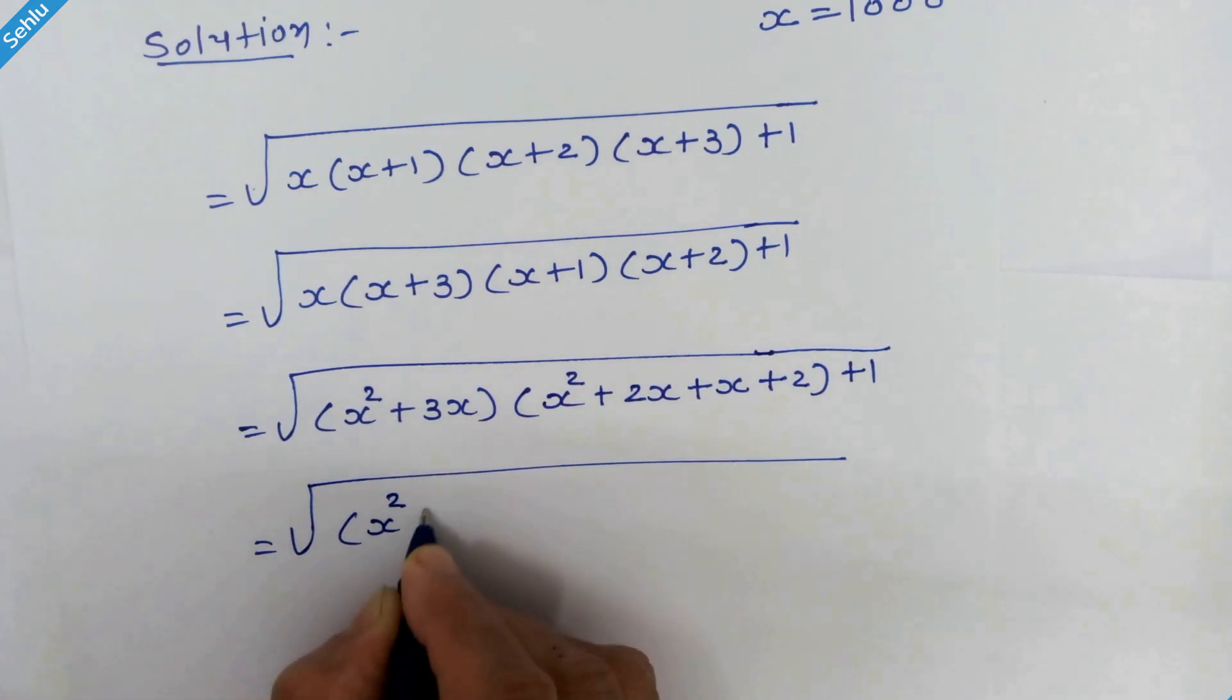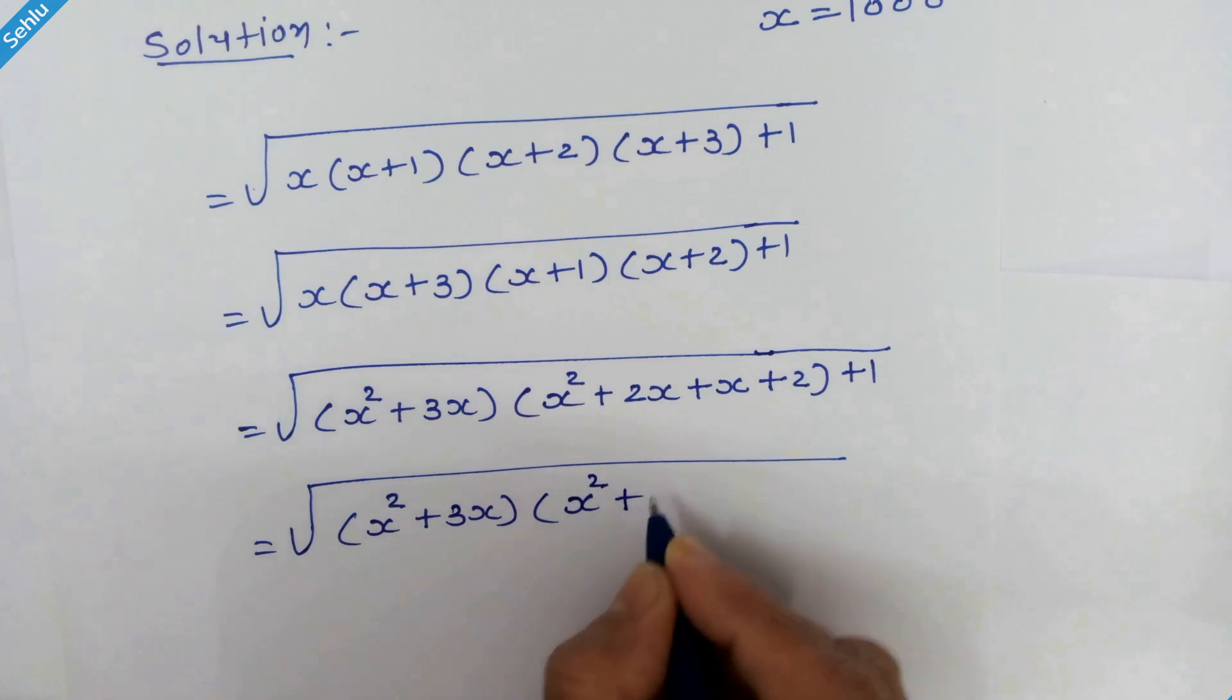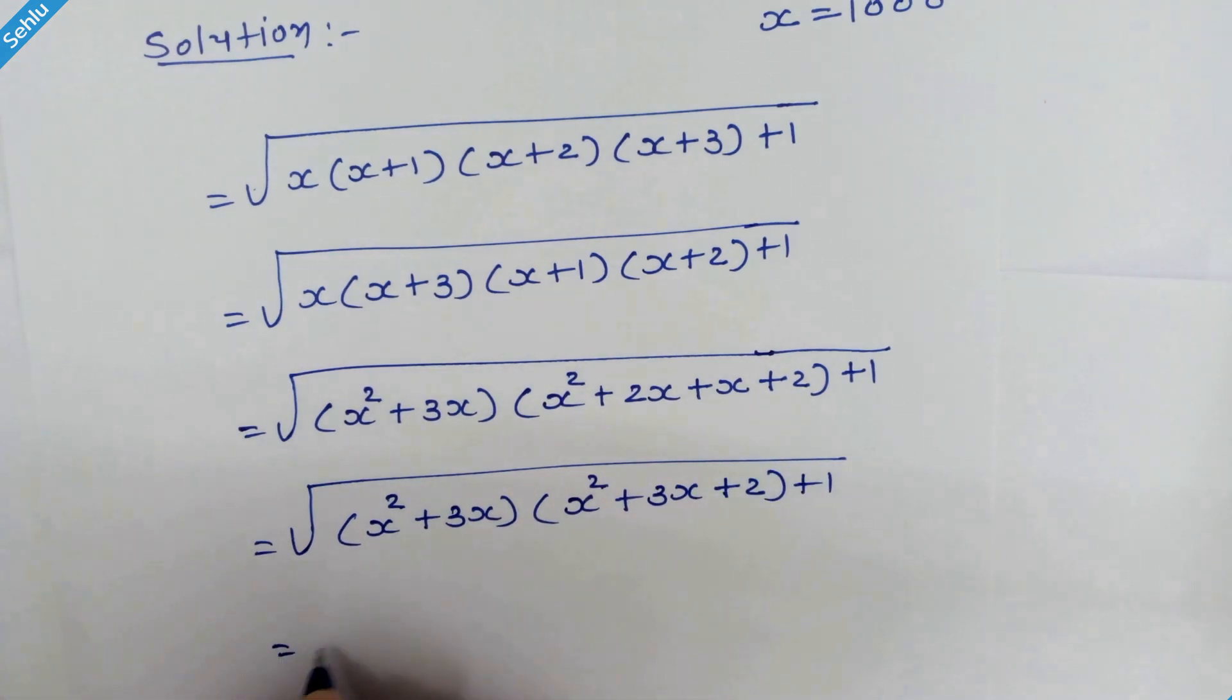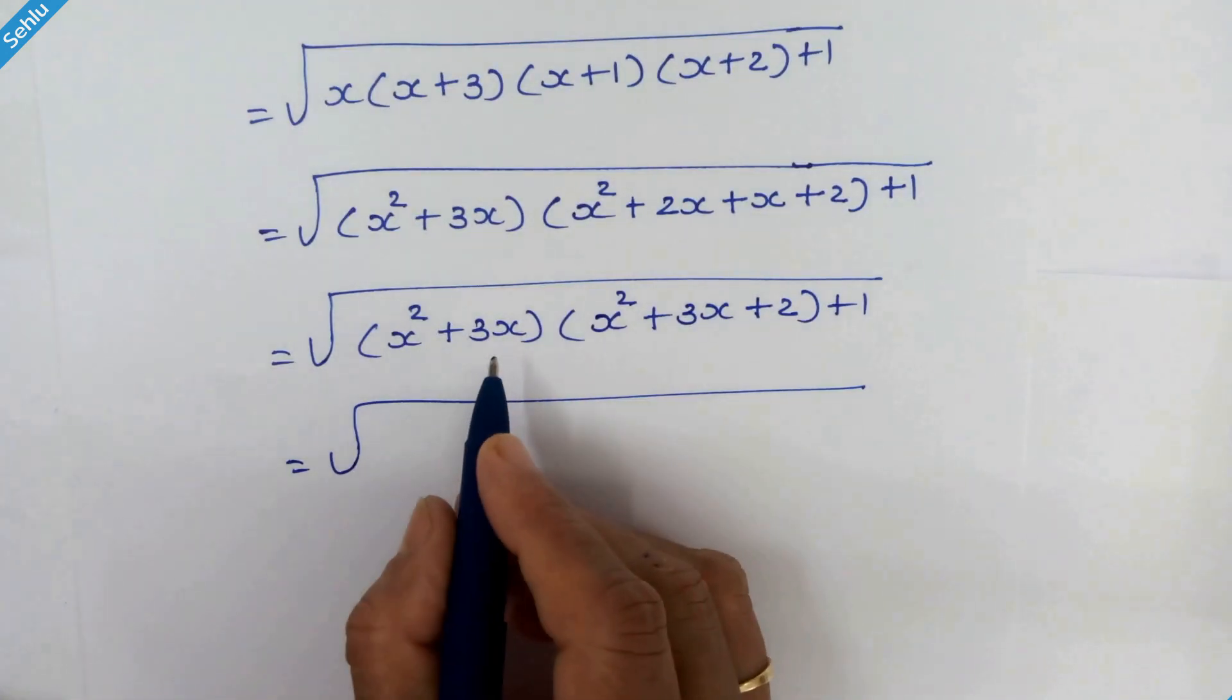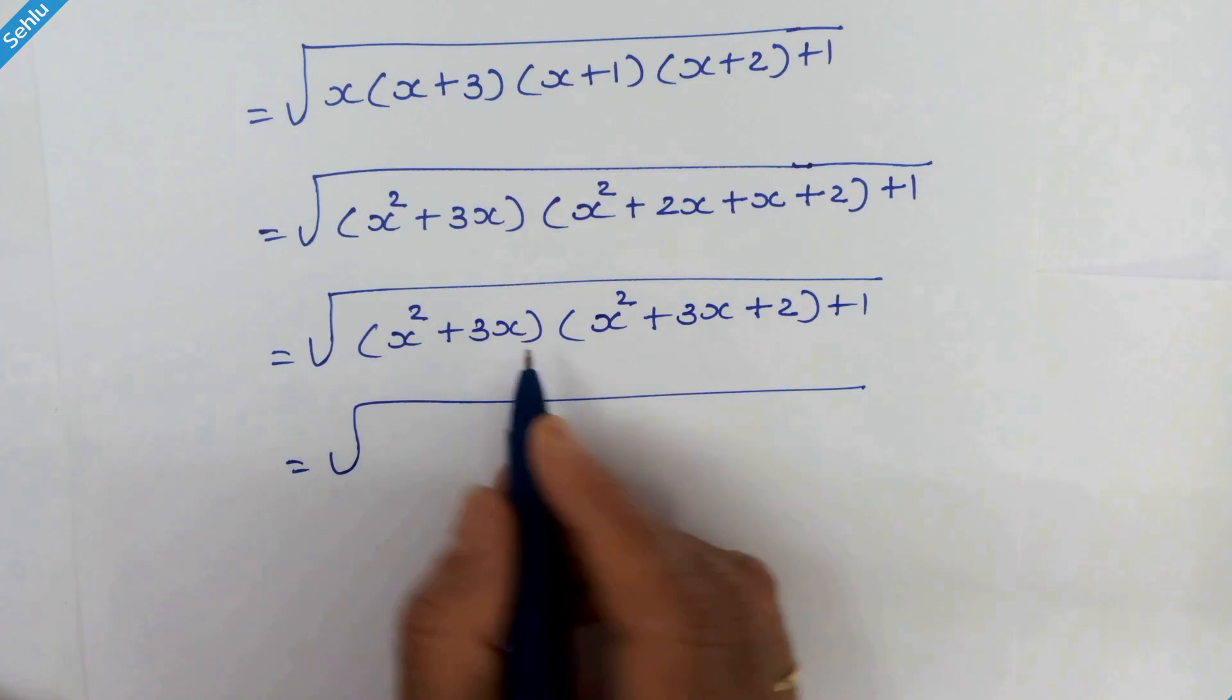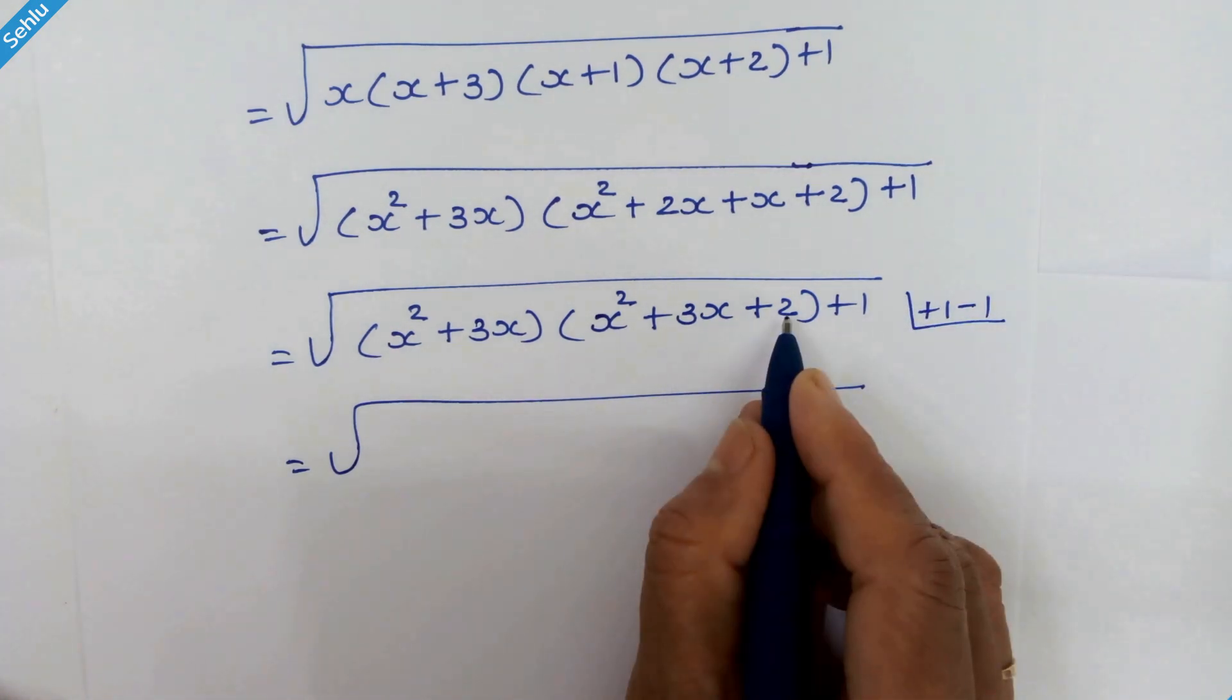x squared plus 3x, times x squared plus 2x plus x is 3x, plus 2, plus 1, equals square root of... Now in this bracket, we will add plus 1 minus 1, and here we will write 1 plus 1 in place of 2.